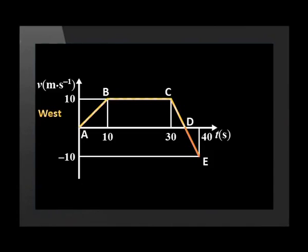Now let's describe the final motion from D to E. At point D, the velocity is zero. Between D and E, the velocity is negative, which means that the velocity increases in the opposite direction. So the car accelerates from zero to 10 meters per second in the last 5 seconds in an easterly direction.